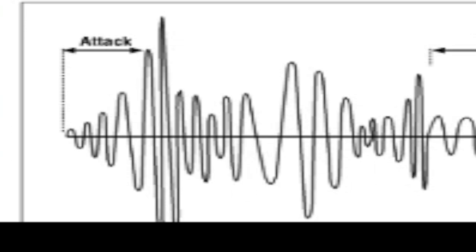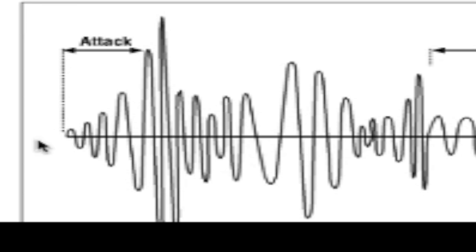Here's a sound wave zoomed in — here's the attack and decay. This is called the transient, especially at the initial peak. All natural sound is a sine wave. A little side note: a lot of times when you get clicks and pops when editing, it's because you didn't cut on the zero-crossing — where the wave goes from positive to negative. Cut there and you won't get those clicks.